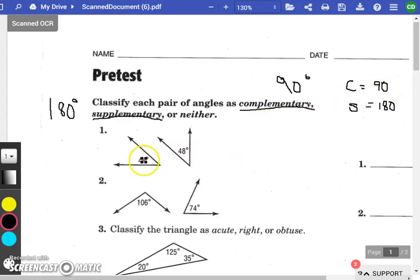So take a look. 42 plus 48 is 90. So once again, that is a complementary angle. These two angles are complementary. When you add 42 plus 48, you get 90.